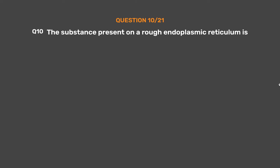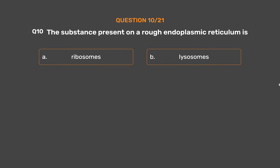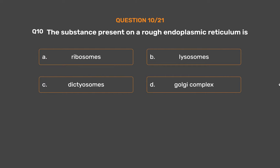Question No. 10: The substance present on a rough endoplasmic reticulum is. Option A: Ribosomes. Option B: Lysosomes. Option C: Dictiosomes. Option D: Golgi complex.